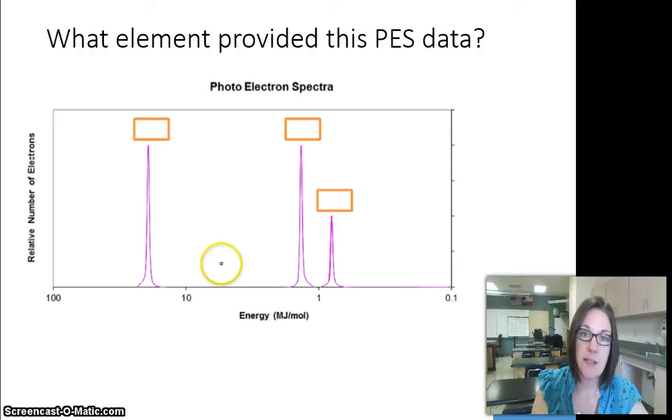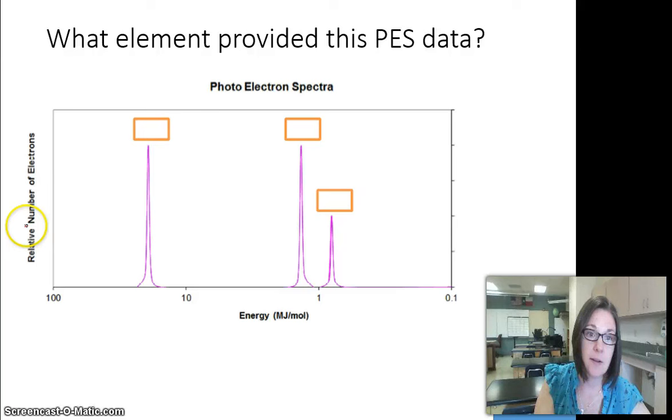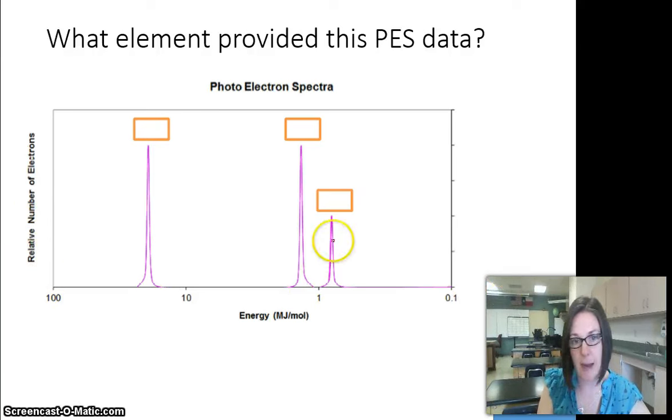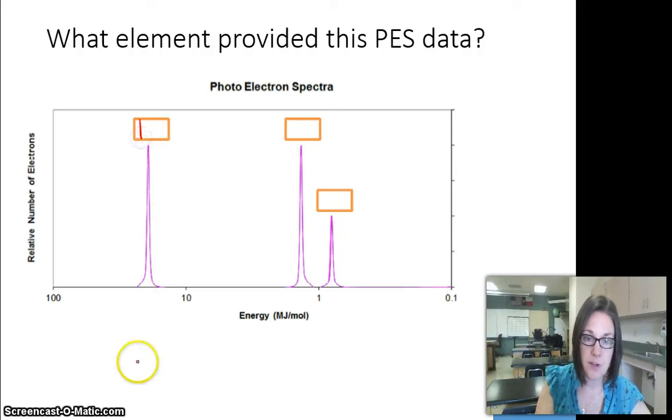Now let's look at a different piece of data and see if we can determine what element gave us this data. We've got number of electrons that starts with a big number and goes smaller as we move to the right. So that means these are going to be on our first energy level, in an S-sublevel, and it's the highest peak, so it's going to be 2.